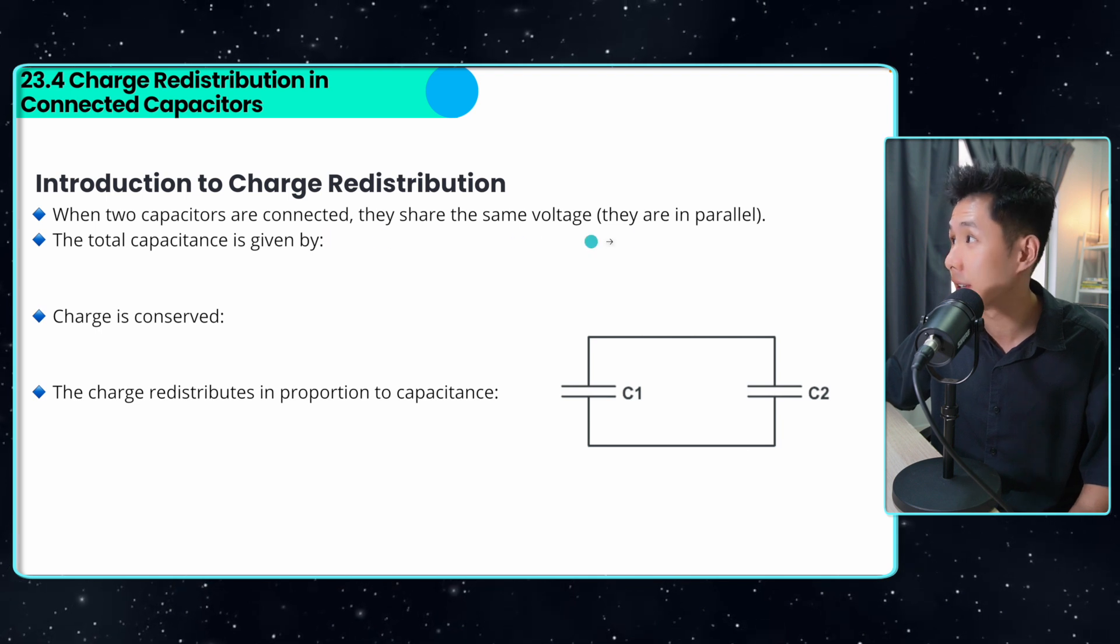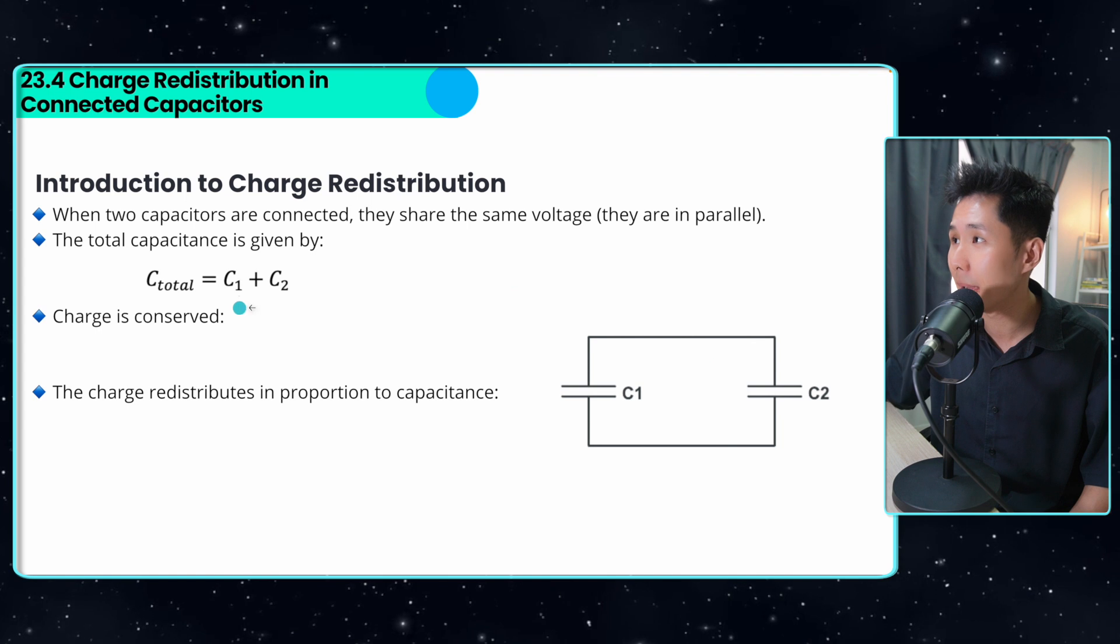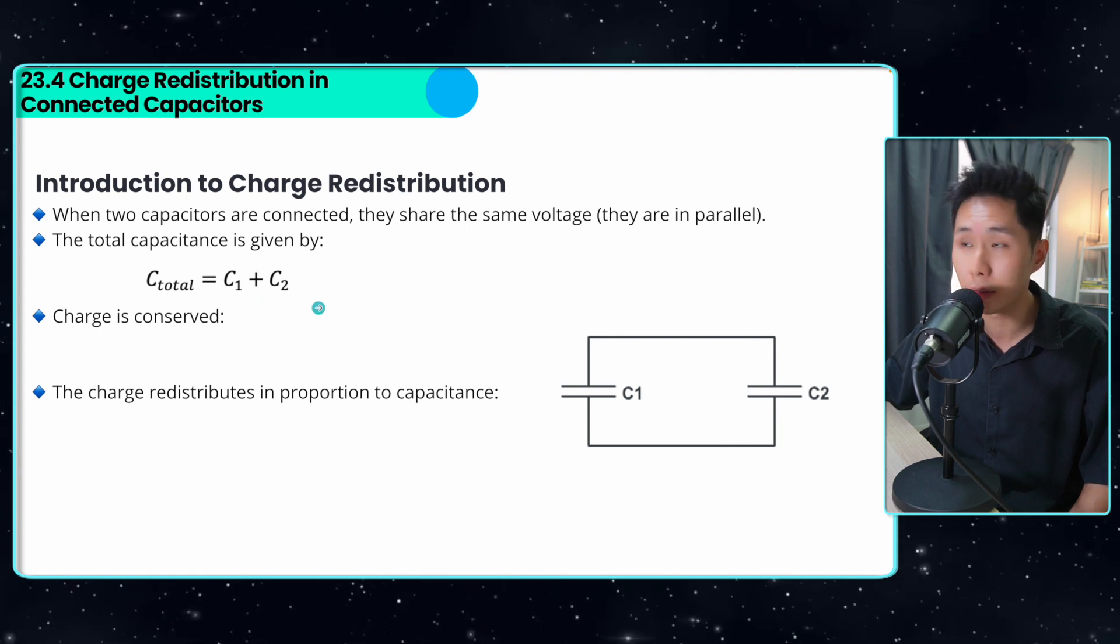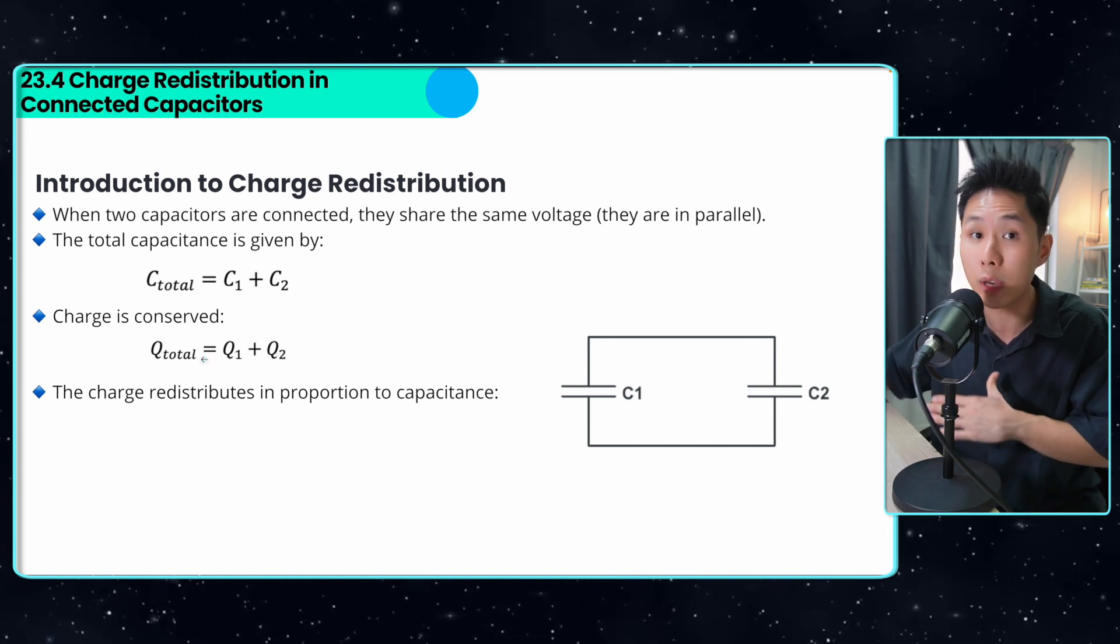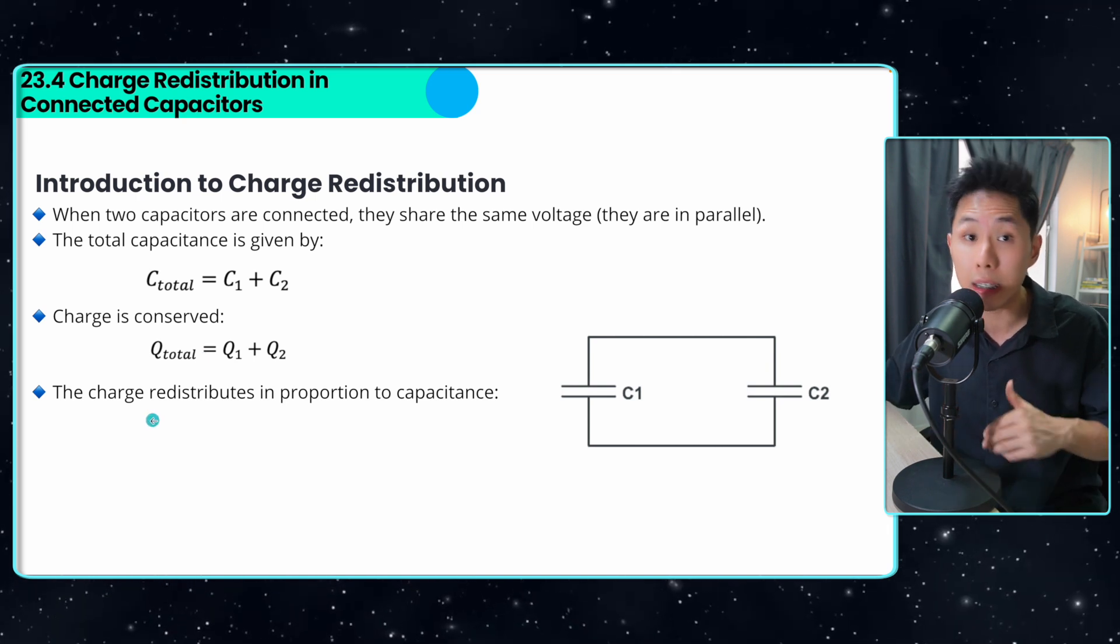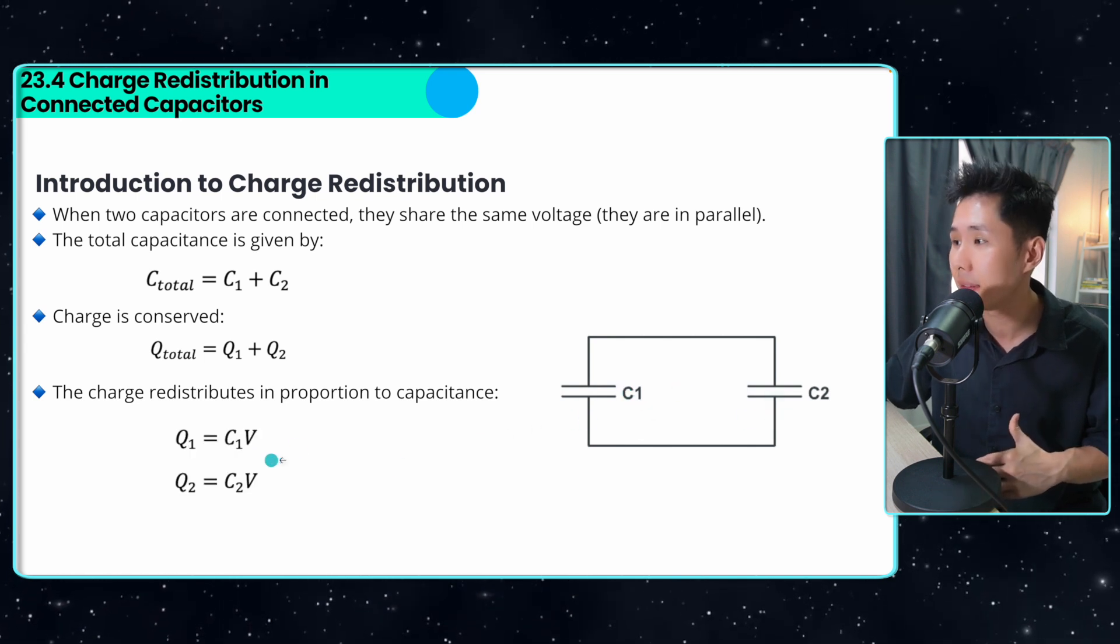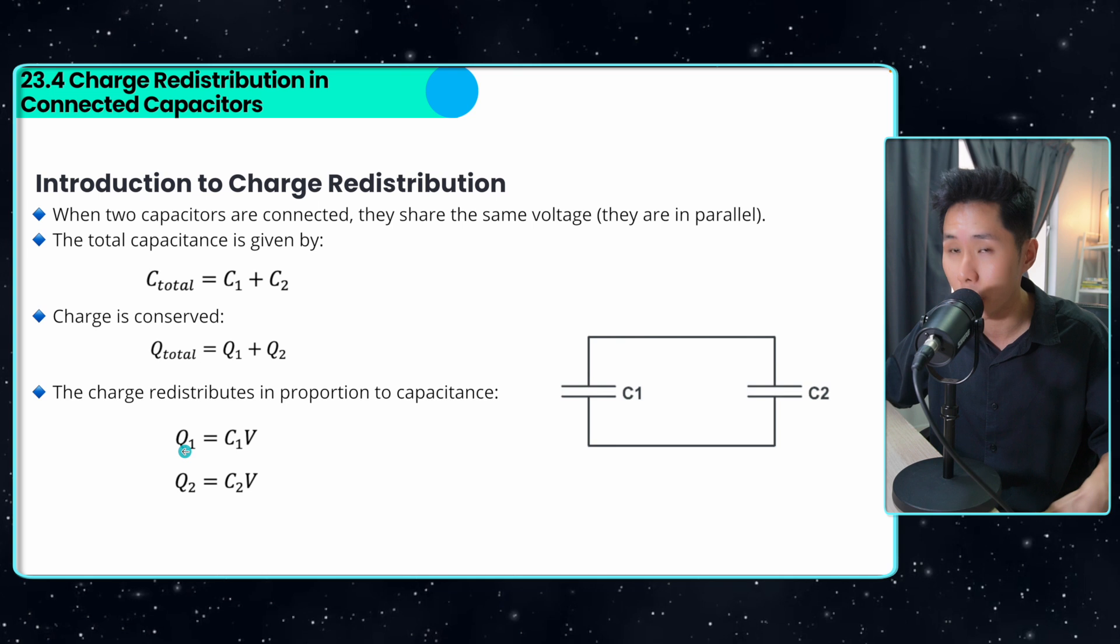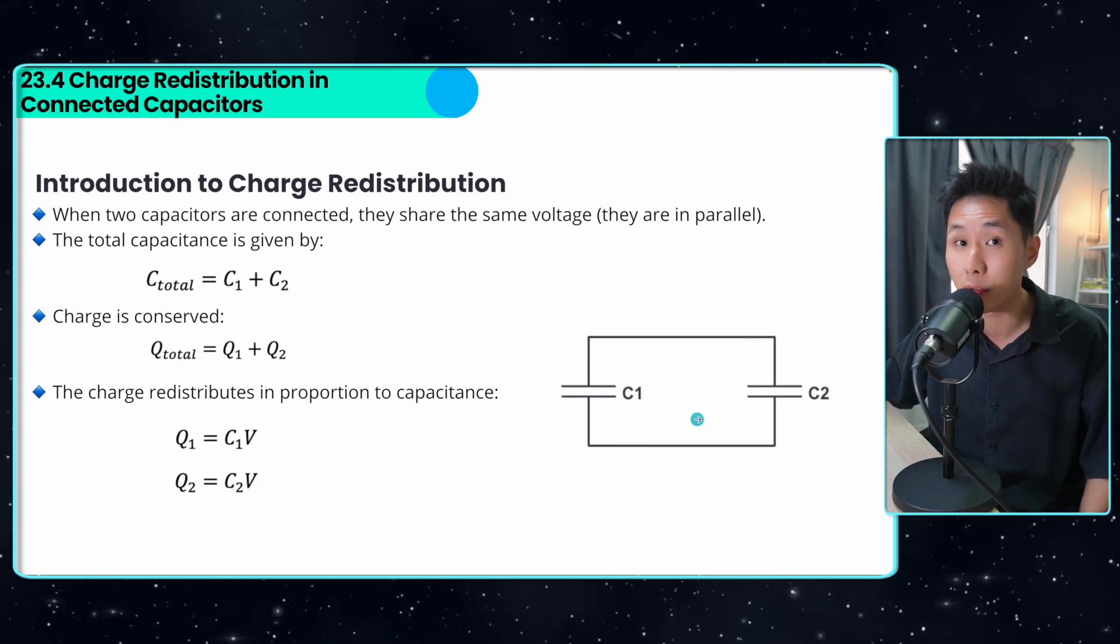So when two capacitors are connected, let's say in parallel, they share the same voltage. The total capacitance will be given by C1 plus C2, which is the amount of charge they can store. Because charge is conserved, like there's no charge created or lost, the charge redistributes in proportion to capacitance. Meaning if you have high capacitance, you get more charge. You have low capacitance, you get less charge. And that's how redistribution works.